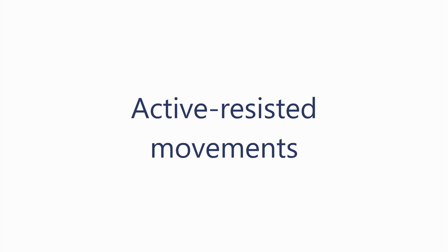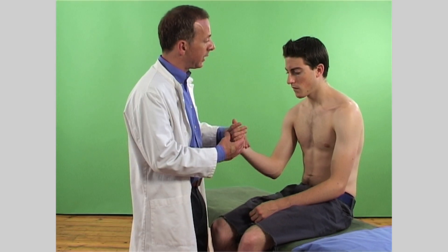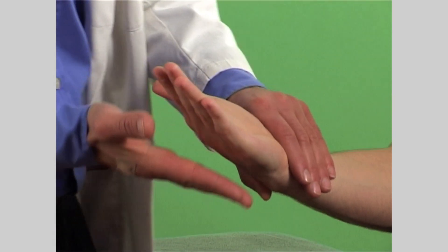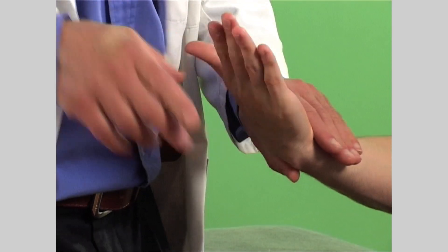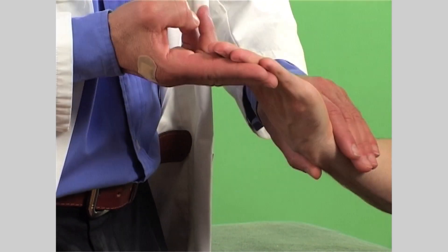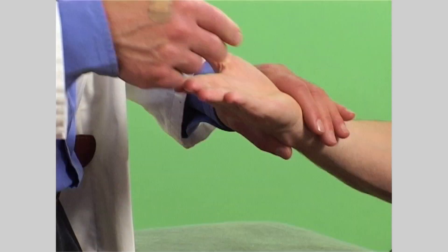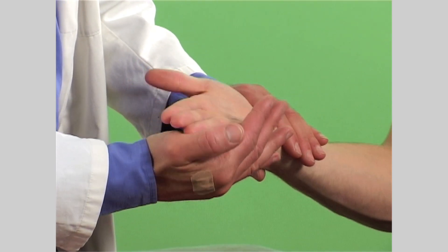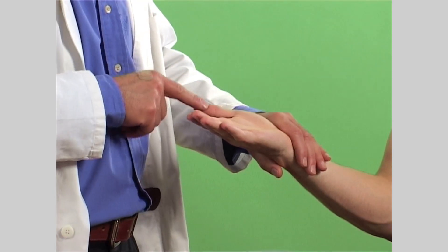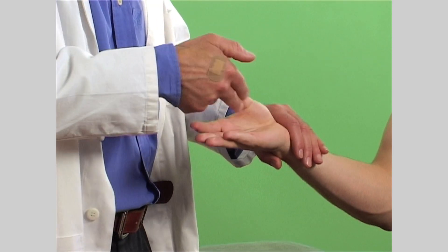Then assess the active resisted movements of the wrists and fingers. Evaluate flexion and extension of the wrist, flexion and extension of the fingers, ulnar deviation, radial deviation and opposition of the thumb. Note the muscle strength, joint stability, the presence of pain or crepitations and compare with the opposite side.